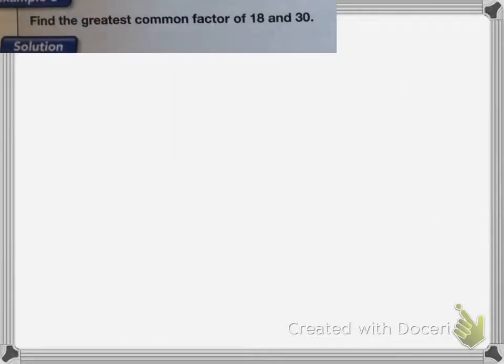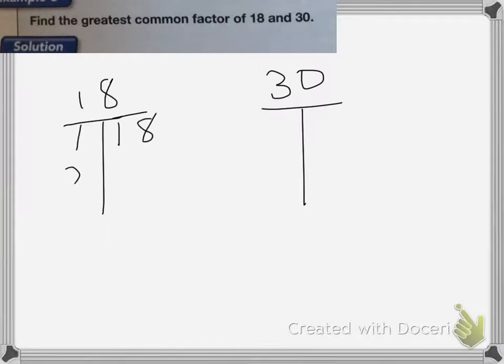This next one is finding the greatest common factor of 18 and 30. The greatest common factor is the biggest, largest factor of both 18 and 30. So first I want to list those. So here's 18 and 30. If I list the factors, I have 1 and 18, 2 and 9, 3 and 6.